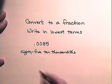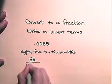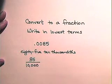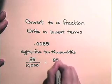Writing that as a fraction, we have 85 over 10,000, or 85 ten thousandths. Both the numerator and denominator are divisible by 5, so we will divide 85 by 5.